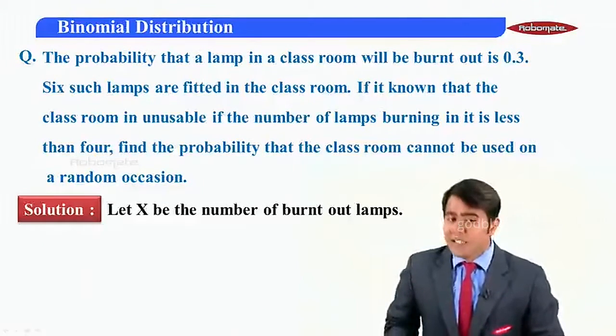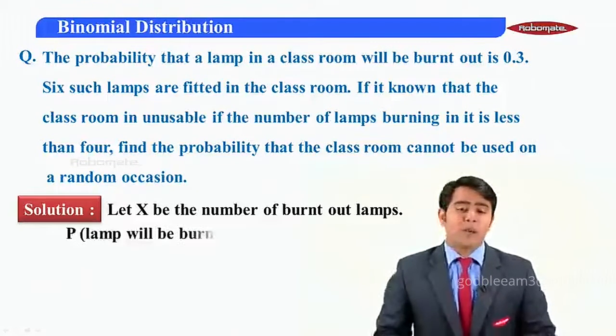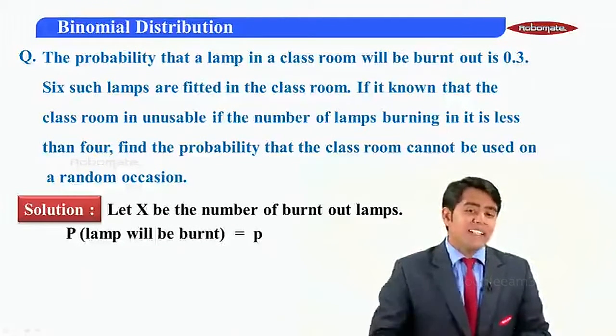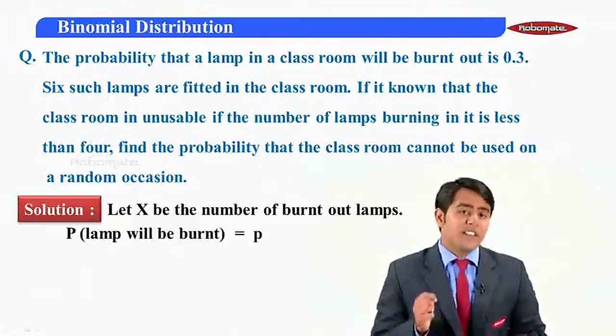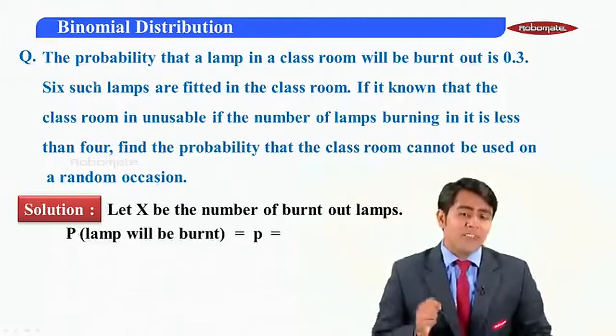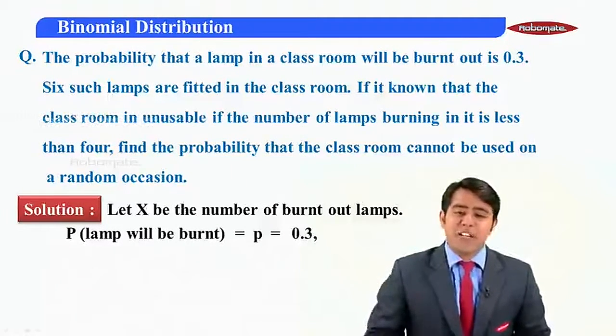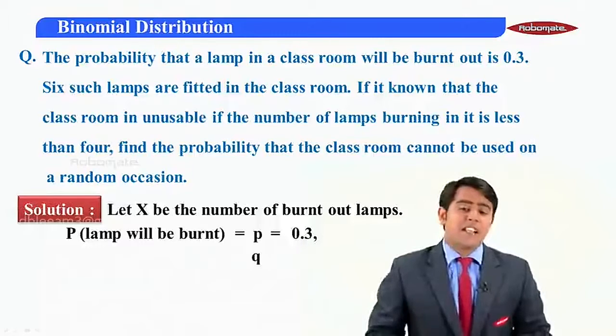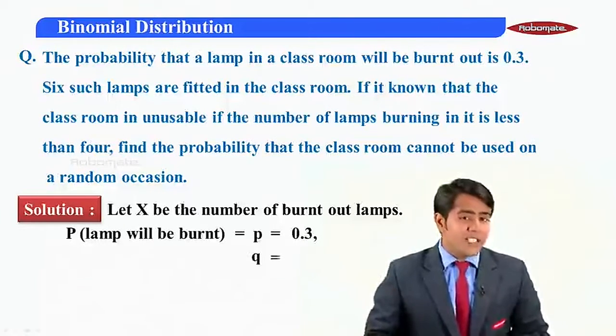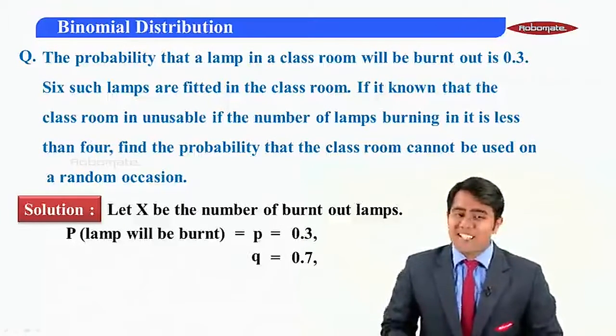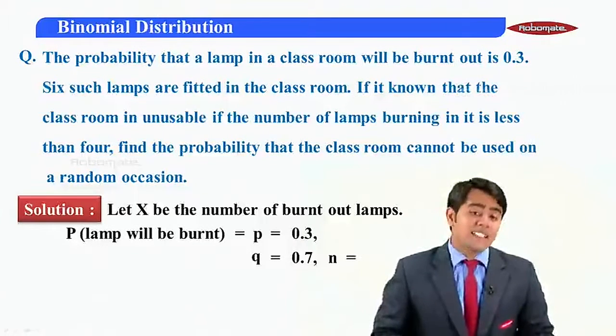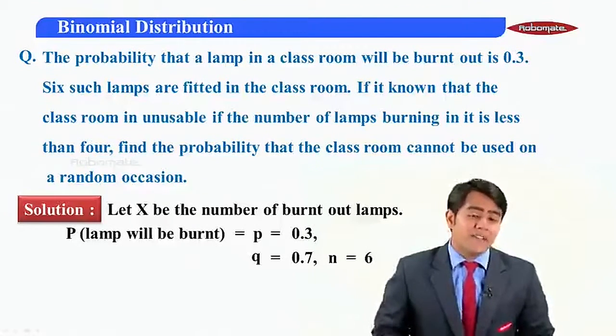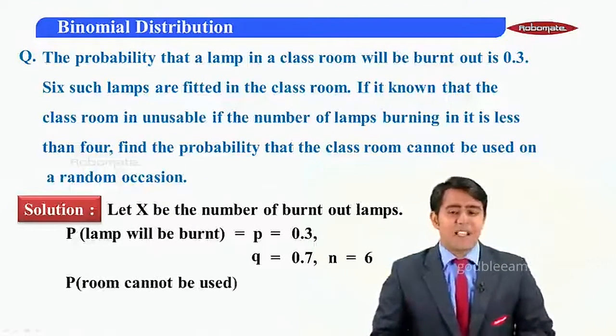Let X be the number of lamps burnt out. The probability that a lamp is burnt out is given to us as 0.3, so I will take P as 0.3. After this, Q will be 1 minus 0.3, which is equal to 0.7. And we have six such lamps, so I can say n will be equal to 6.